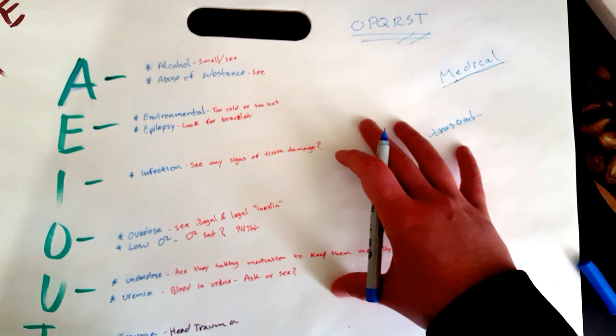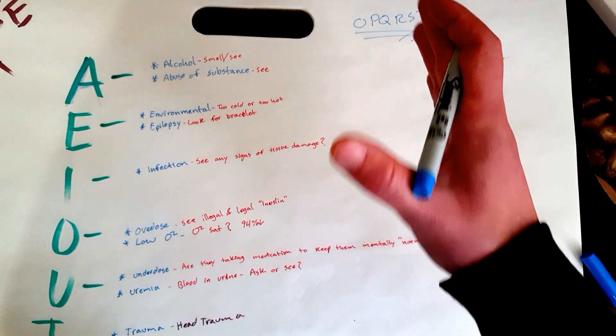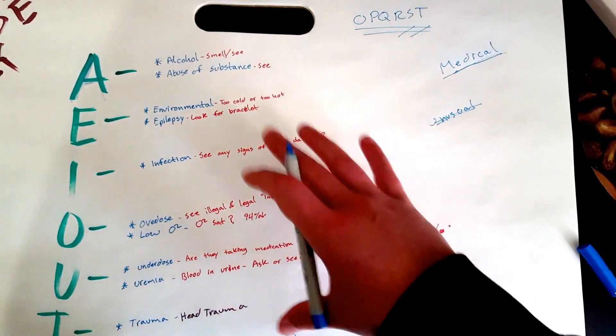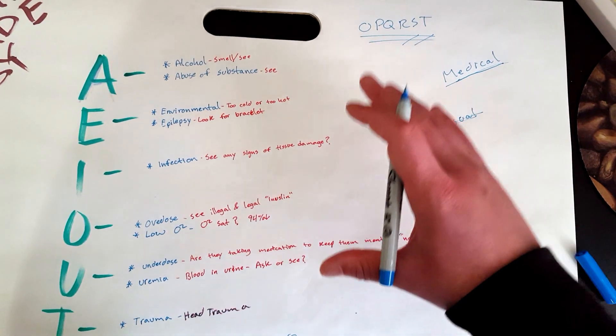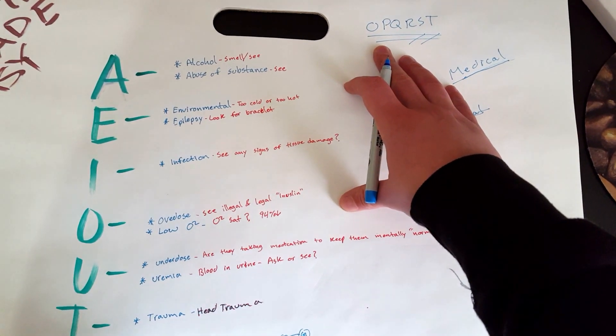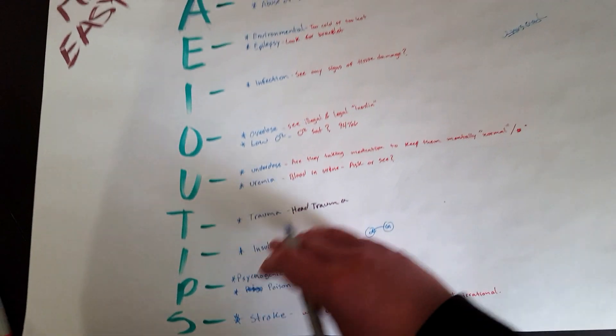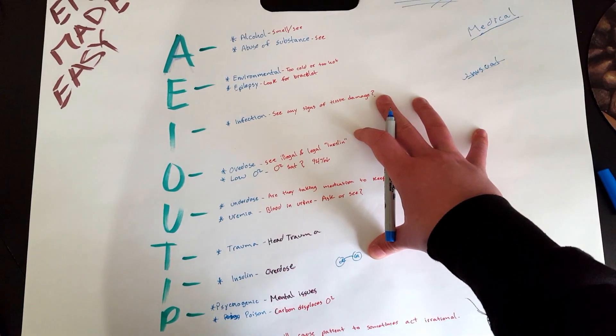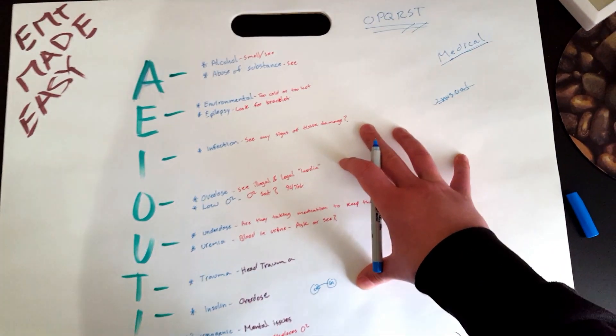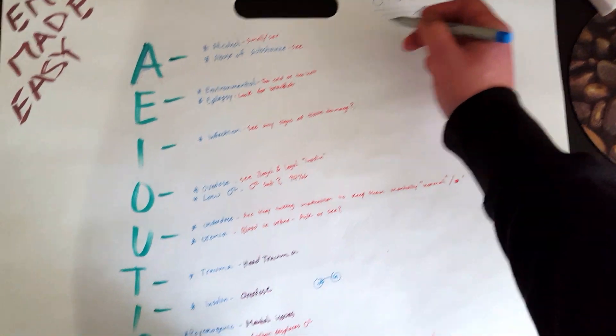Now your classroom might be different. In your classroom, they might require you to still go through your OPQRST and do AEIOU-TIPS. What AEIOU-TIPS does for you is that it helps you kind of figure out what's going down with the patient or what's going on with the patient without you having to actually directly talk to that patient.